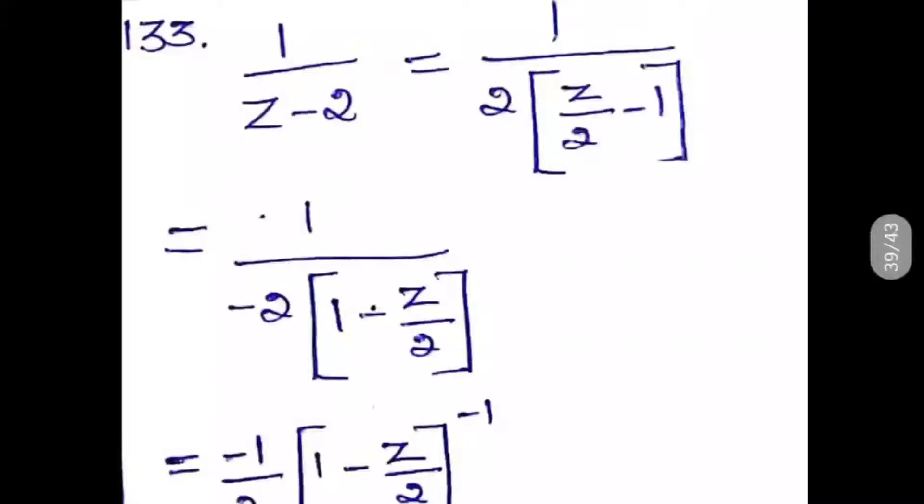First we are taking 2 outside, so we will get 2 into (z/2 - 1). This is a kind of x-1 formula, and then we are going to convert it into 1-x.